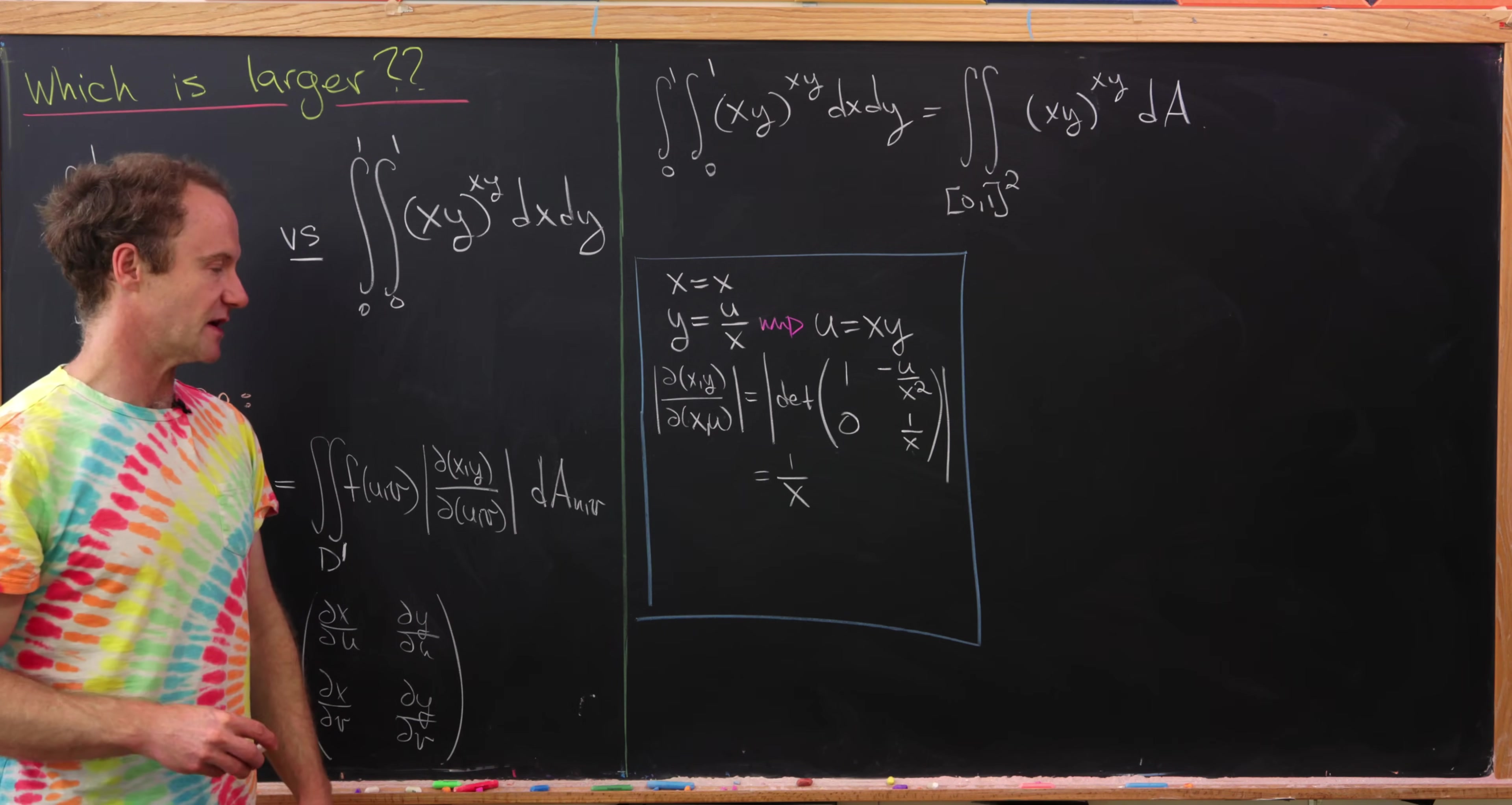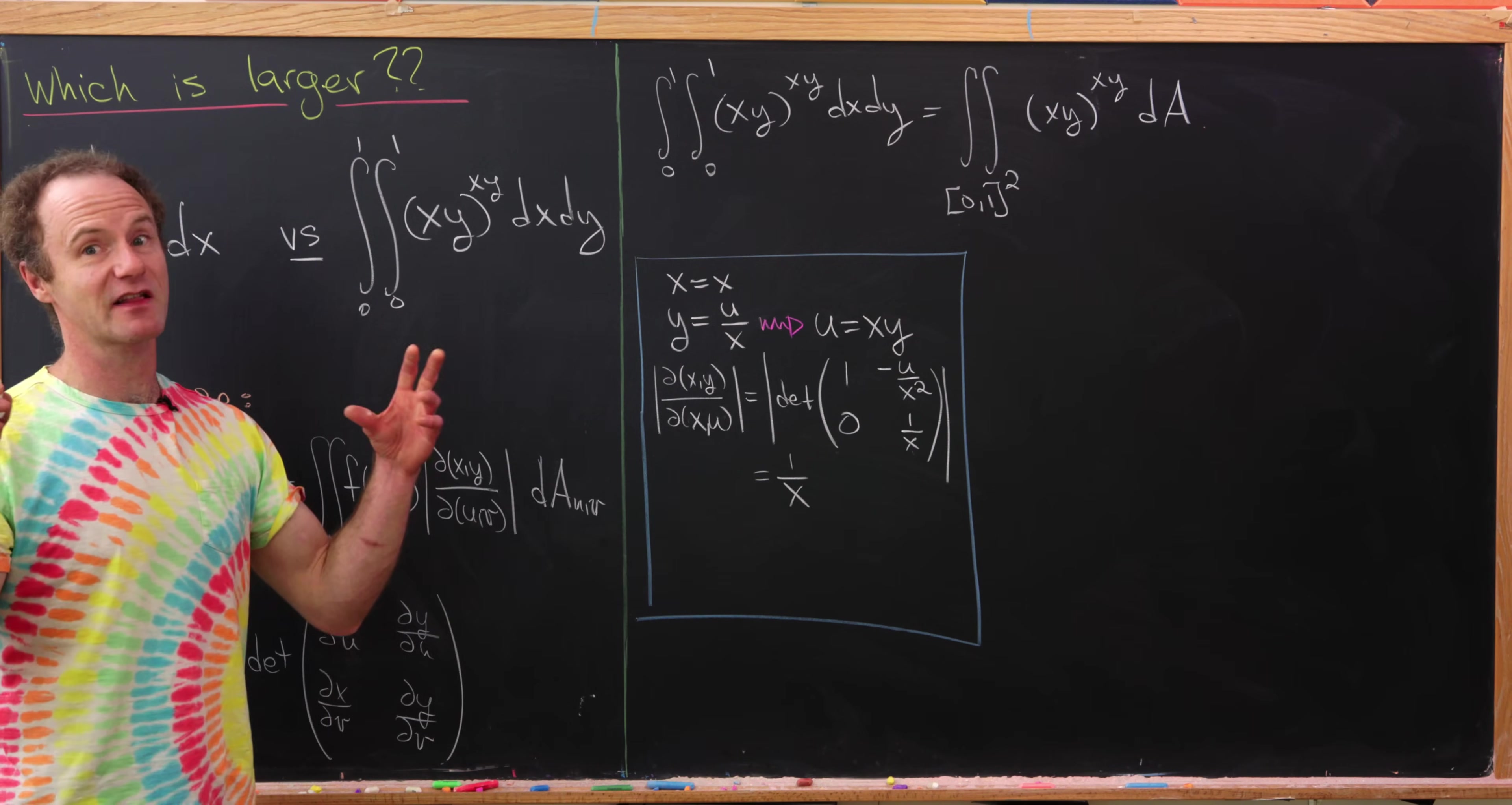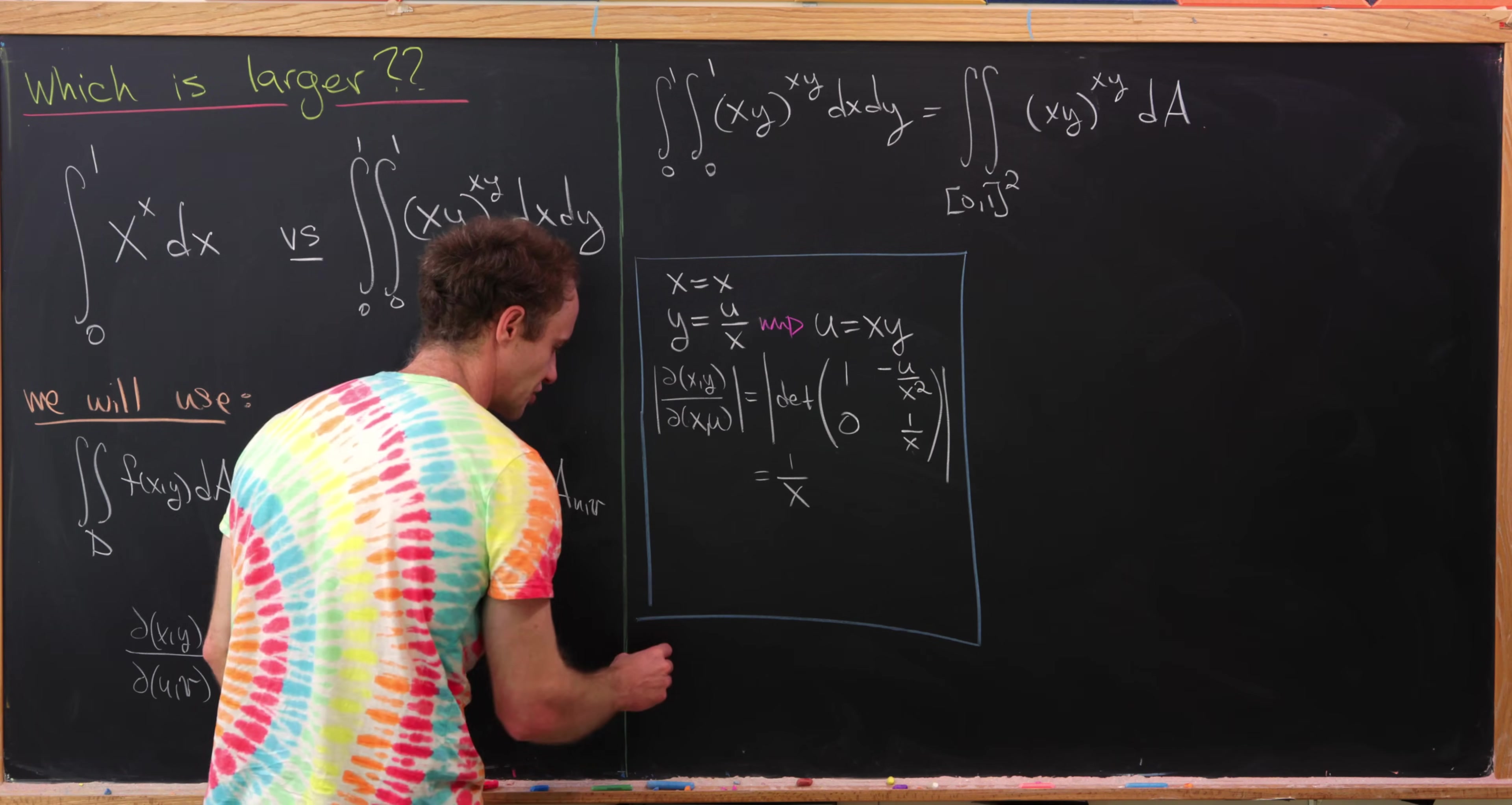So that's our Jacobian. Now we need to see what happens to the region of integration.